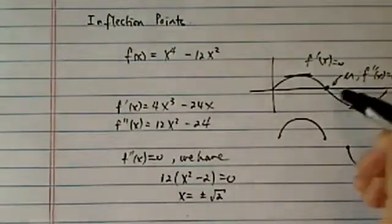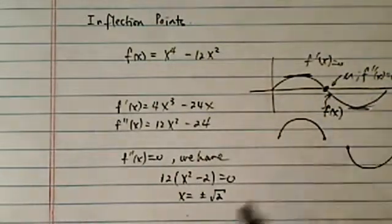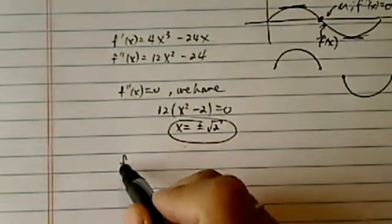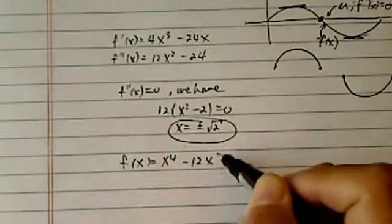Inflection points are on the original curve, so solving and setting the second derivative equal to zero only gives us the x-coordinate. What we need to do is find where the corresponding points are on the function itself. We have f(x) = x^4 minus 12x^2.